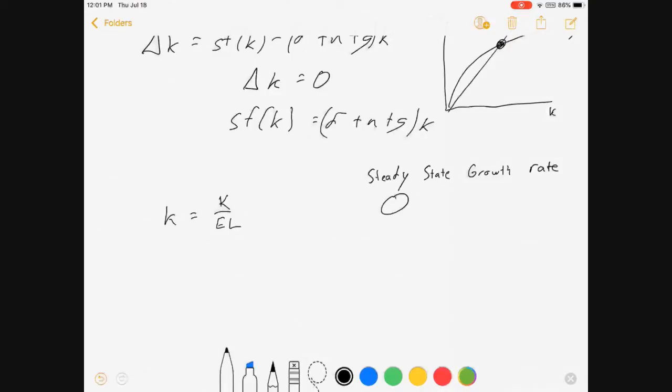If we look at output per effective worker, which is y over E times L, which is also called f of little k, this thing has a steady state growth rate of zero.